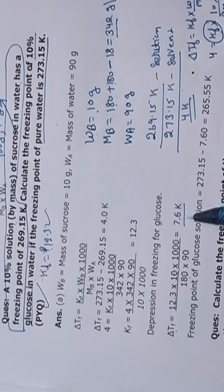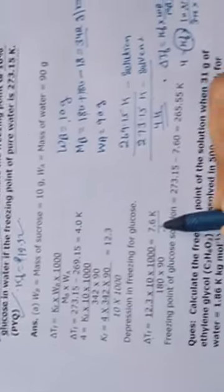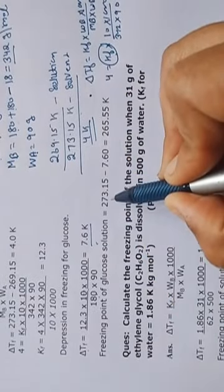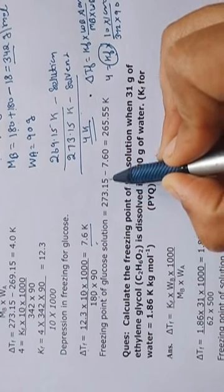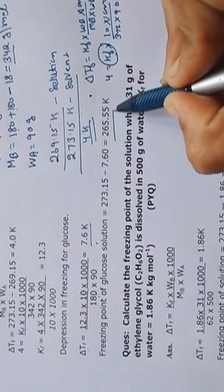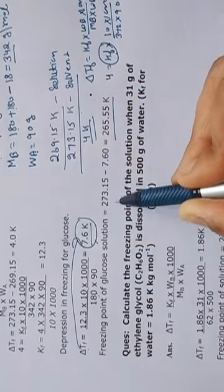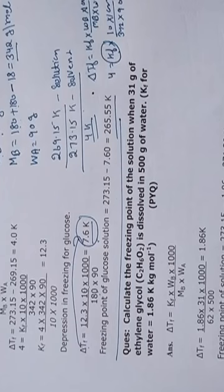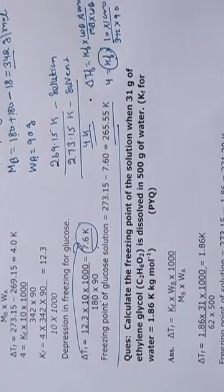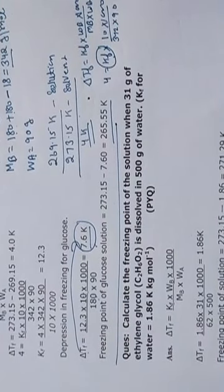7.6 is not the freezing point — it is the depression in freezing point. So the actual freezing point of the solution is 273.15 − 7.6. Read the numerical carefully: they may ask for the depression in freezing point or for the actual freezing point — these are two different terms.